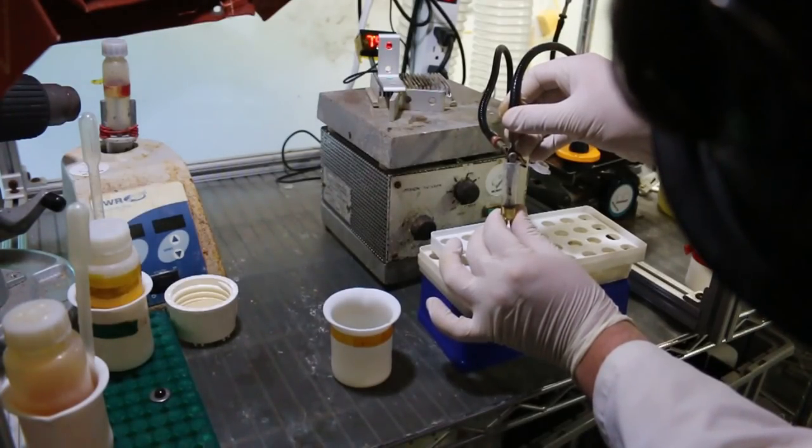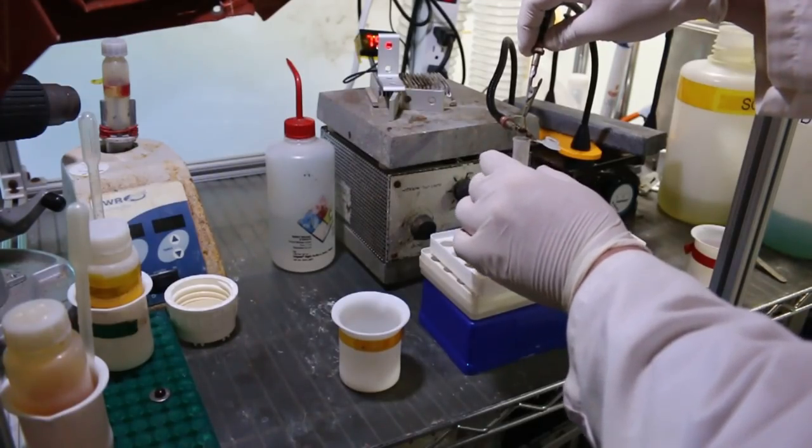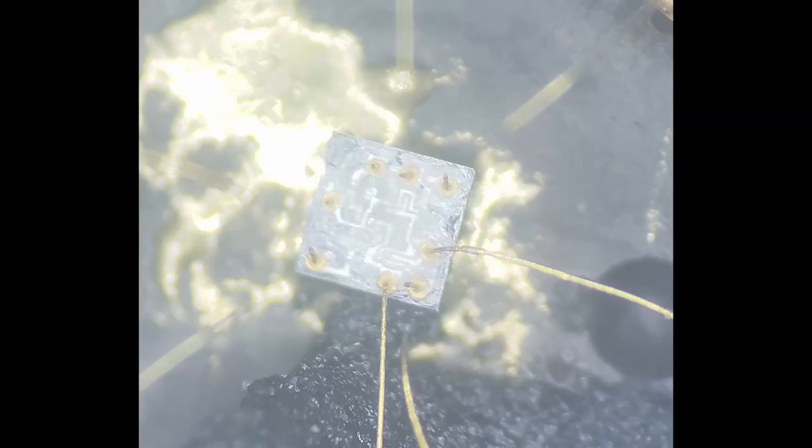So instead of straight WFNA, I added sulfuric acid to help inhibit corrosion. This is known as mixed acid. This produced a decent decap with minimal effort in a few hours, but caused the epoxy to swell and break the bond wires.